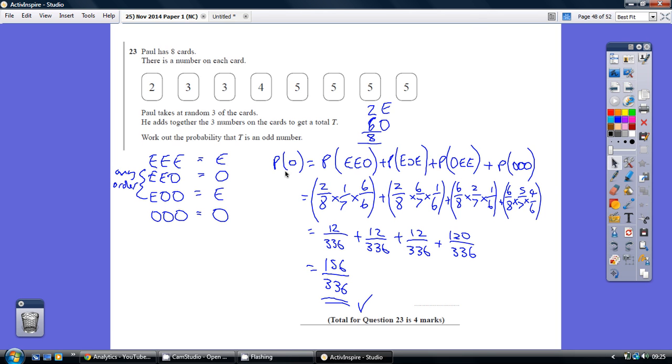So basically, how do we get probability of an odd? We've got this even, even, odd, any order. Any order means it could come even, even, odd, or even, odd, even, or odd, even, even. Those are the three ways you can get even, even, odd in any order. There's only one way you can get odd, odd, odd.